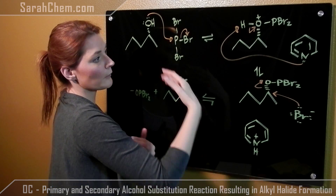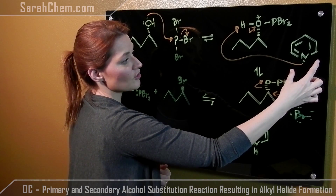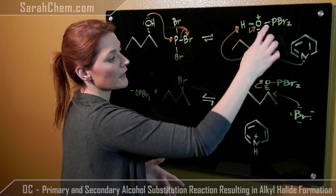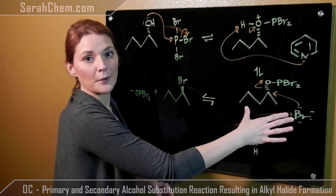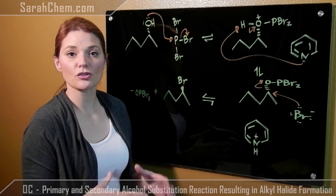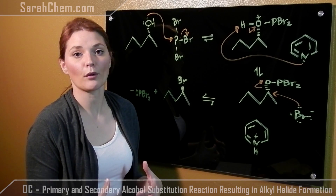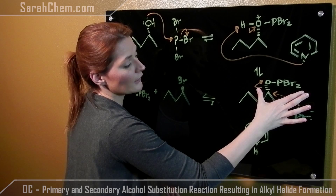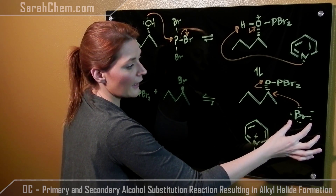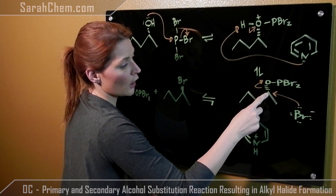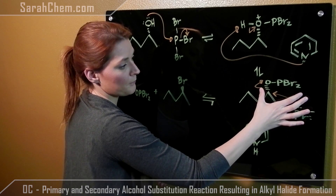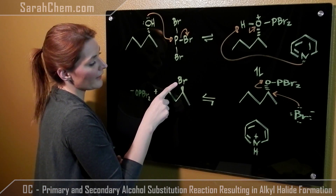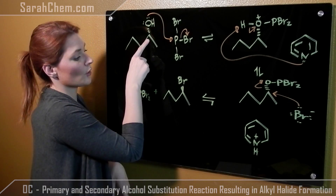Now, to prevent the reaction from going backwards, we put pyridine in the reaction so that it can come and deprotonate this O, giving its electrons, so now it's a much more stable group. O and P have really strong bonds because of really good orbital overlap. So this is now a very good leaving group. The bromide can come and backside attack this carbon, kicking off this group, which then forms this alkyl halide, where the bromide has an inverted configuration relative to the original alcohol.